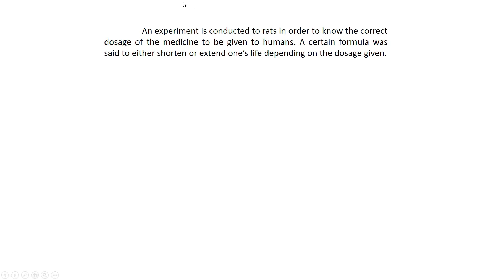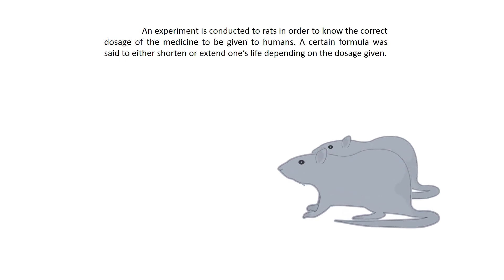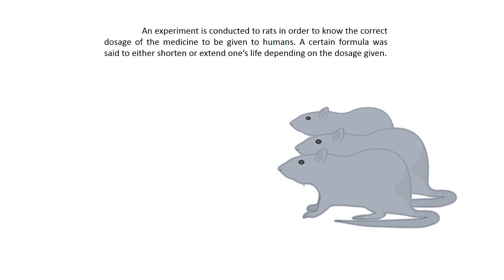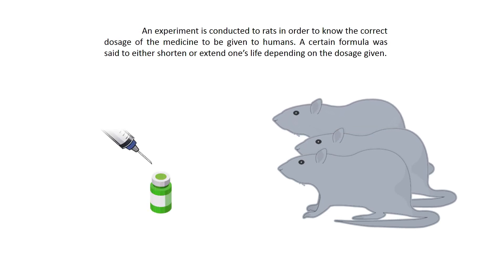So I have here a situation. An experiment is conducted on rats in order to know the correct dosage of medicine to be given to humans. A certain formula was said to either shorten or extend one's life depending on the dosage given. By the way, dosage is the amount of drugs given or treated to a patient or a certain subject.